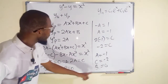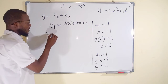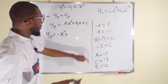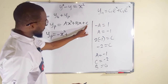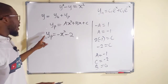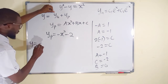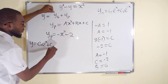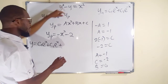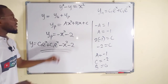Now substitute a, b, and c into y sub p. We have y sub p equals negative x squared (since a is negative one), plus b times x which is zero so that term vanishes, plus c which is negative two. So y sub p equals negative x squared minus two. Adding y sub h and y sub p gives the general solution: y equals c1 e to the x plus c2 e to the negative x, minus x squared, minus two.